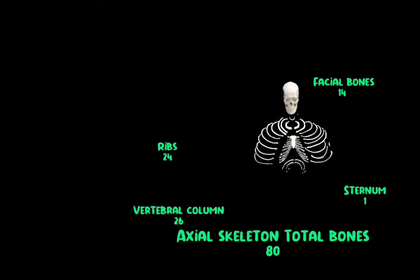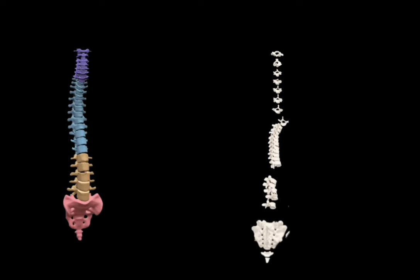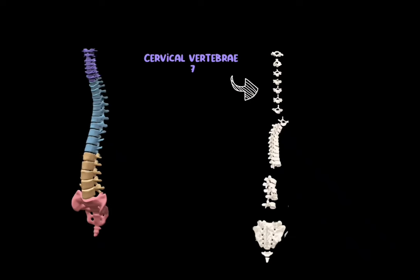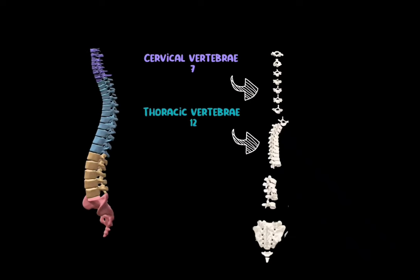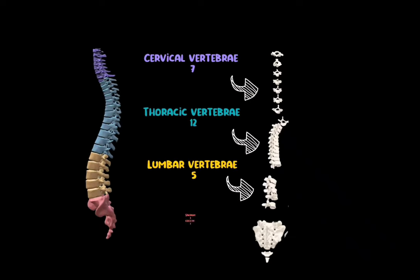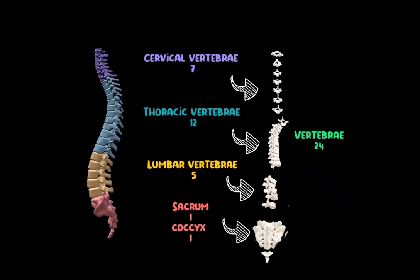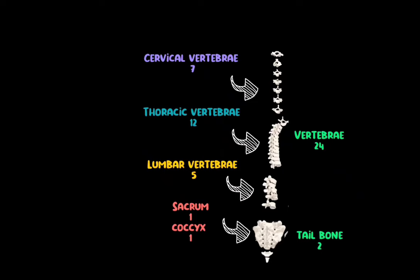Let us now examine how 26 bones make up the vertebral column. The vertebral column is made up of separate individual irregular bones known as vertebrae. You have 7 cervical vertebrae, 12 thoracic vertebrae, 5 lumbar vertebrae, 1 sacrum, and 1 coccyx. Together that makes 24 vertebrae plus 2 tailbones, making the total bones of the vertebral column 26.